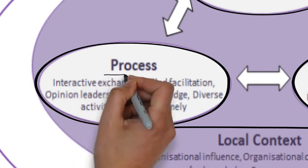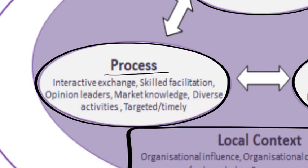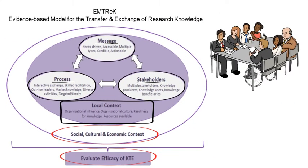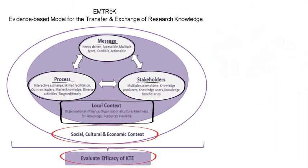The idea that knowledge transfer is an interactive exchange — that it can't be passive — is not new; it's central to many definitions. But what was interesting was this idea that we must market that knowledge. How many researchers are good marketers of their research? We don't think about social media, we don't think about engaging messages. And the idea that we have to do lots of different things to effectively disseminate our messages — diverse activities — and that those activities have to be targeted and timely. You do not wait till the end to transfer your knowledge, because then you won't have a fertile ground onto which you can sow that information.